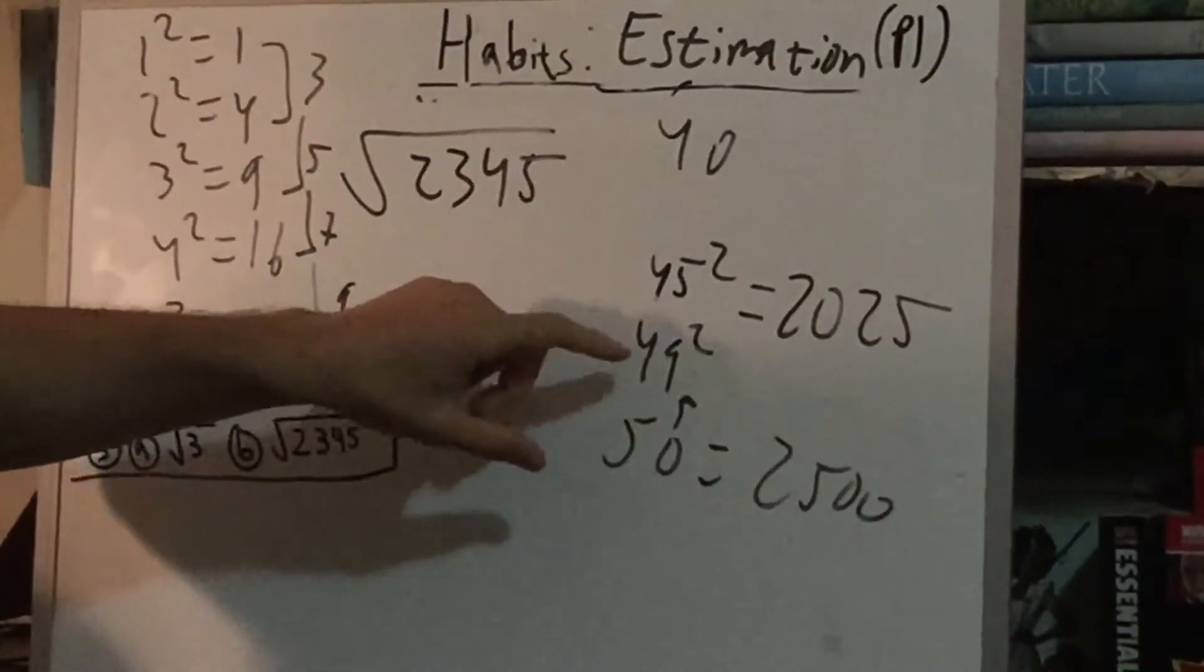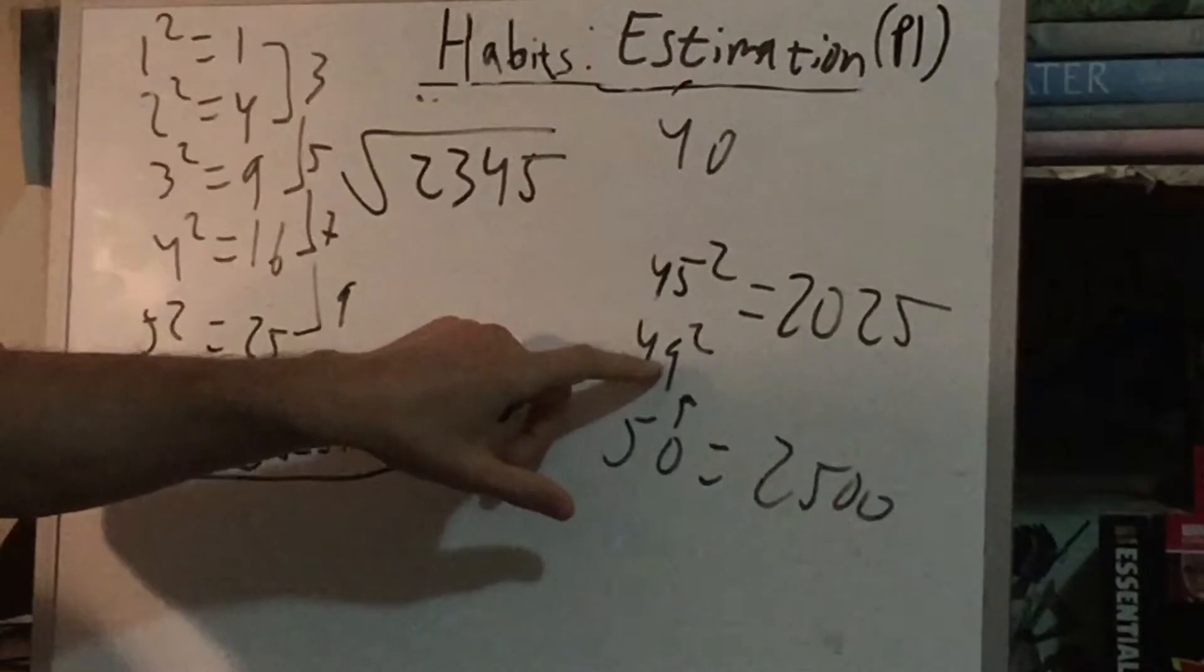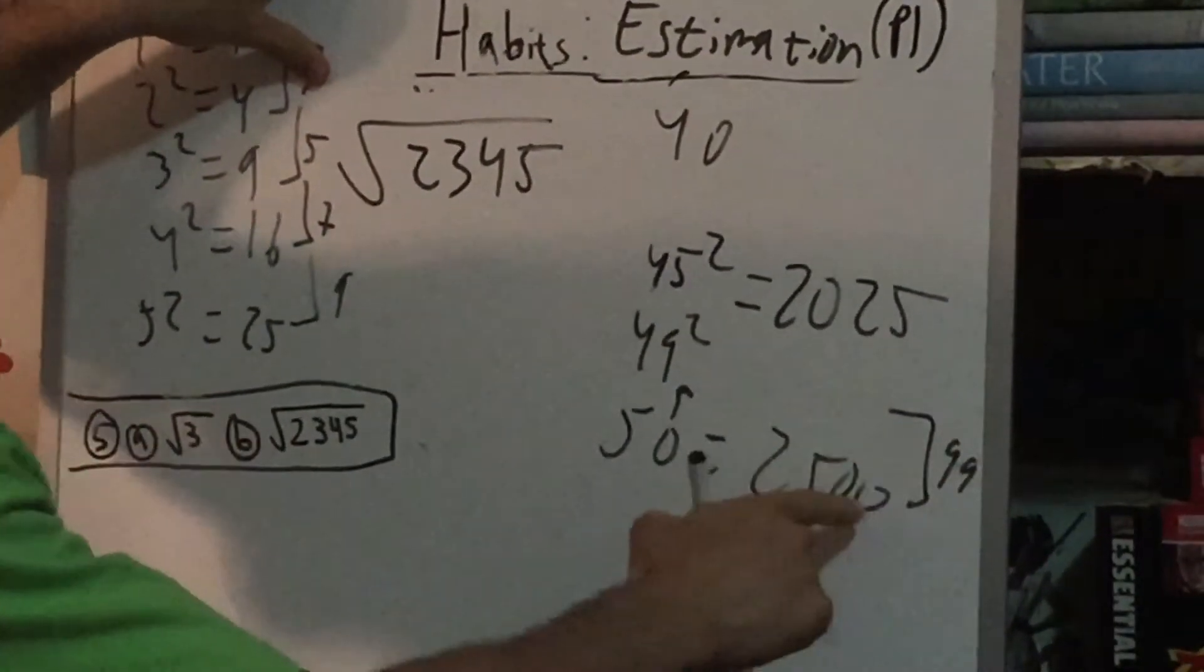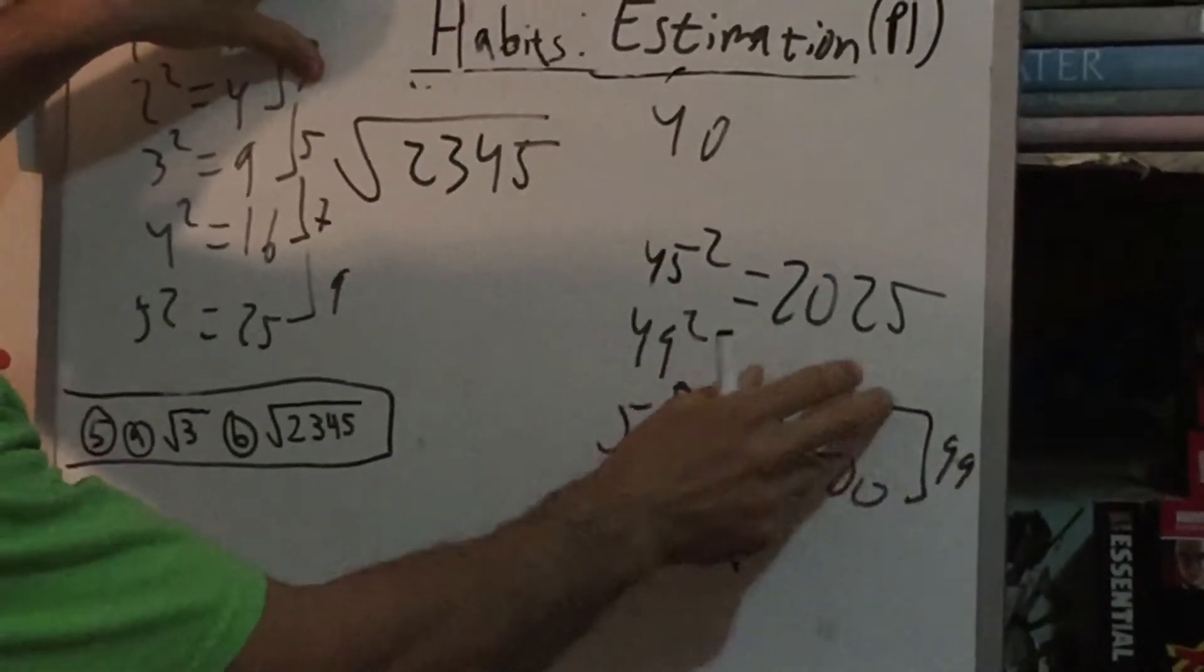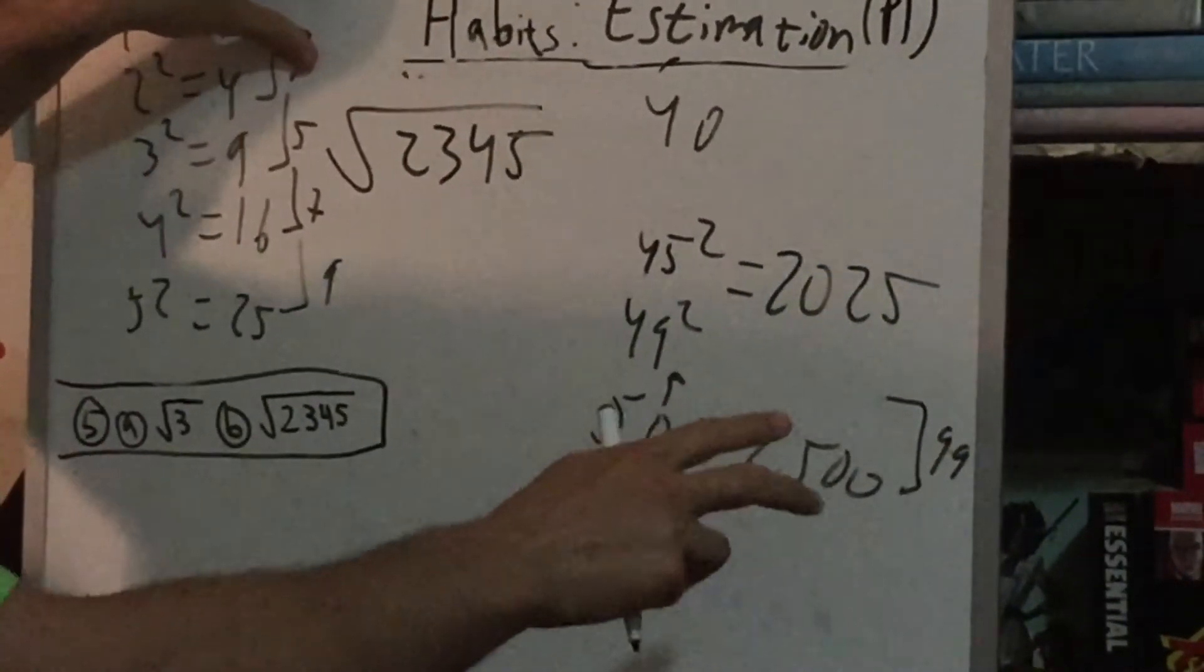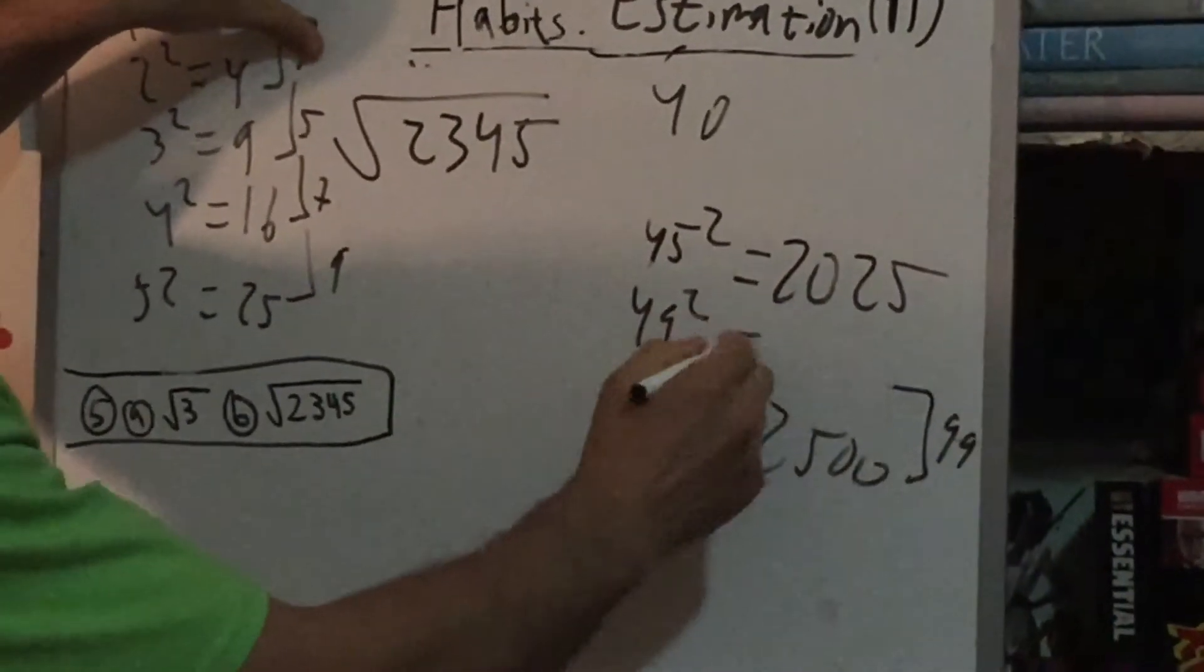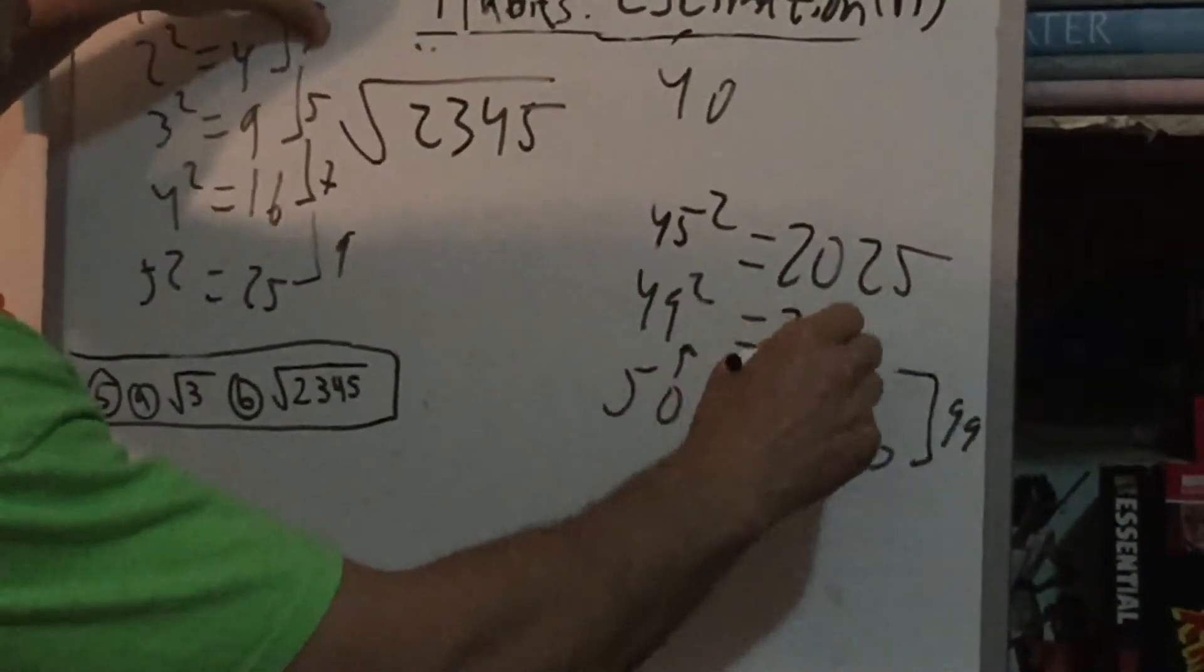So we know that 49 doubled plus 1, which would be 99, would be added to whatever this is to get 2,500. So instead of multiplying this, we're just going to subtract 99 from 2,500 and get 2,401.